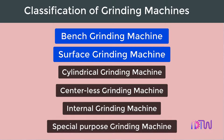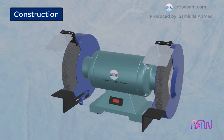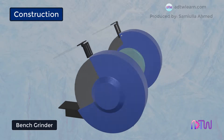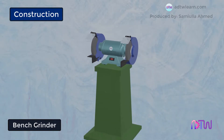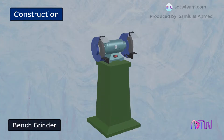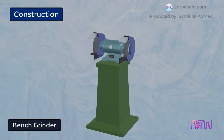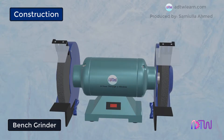We call this a bench grinder because it is used by placing on a bench. The size of this grinder is small and it is used for small purposes, such as the sharpening of small tools like a single point cutting tool. Now let's look at the parts of the bench grinder.